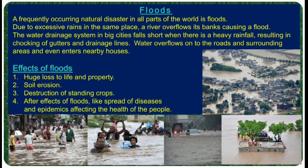The next disaster is floods. Floods are a frequently occurring natural disaster in all parts of the world. Due to excessive rains in the same place, a river overflows its bank causing a flood. The water drainage system in big cities falls short when there is heavy rainfall, resulting in choking of gutters and drainage lines. Water overflows onto the roads and surrounding areas and even enters nearby houses.